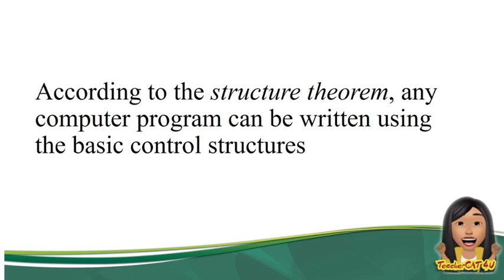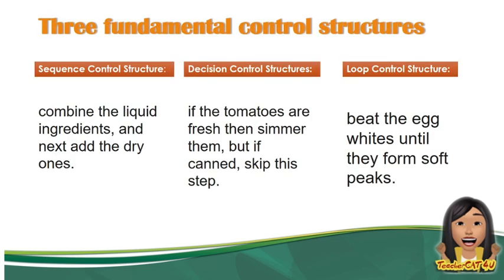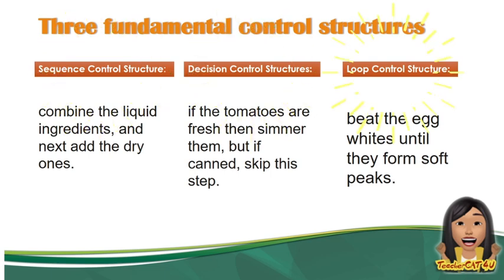What is a control structure? According to structured programming, any computer program can be written using the basic control structures. There are three fundamental control structures: the sequence control structure, the decision control structure, and the loop control structure.